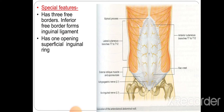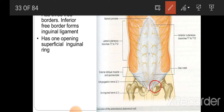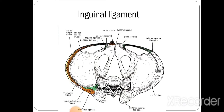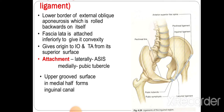The external oblique muscle has one opening known as the superficial inguinal ring. The inguinal ligament, also known as Poupart's ligament, is formed by the lower border of the external oblique muscle rolled on itself; it is attached to the fascia lata inferiorly and gives origin to the internal oblique and transversus abdominis superiorly. It runs from the anterior superior iliac spine to the pubic tubercle. The grooved upper surface of the inguinal ligament forms the floor of the medial half of the inguinal canal.